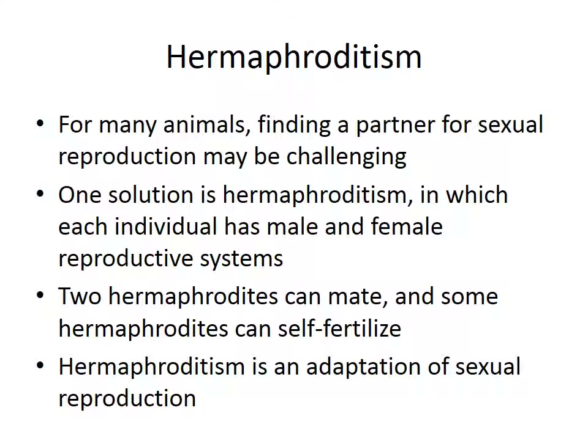In sexual reproduction there is also something called hermaphroditism. This is when there are distinct genders but finding a mate is very challenging for some animals. One solution is hermaphroditism, in which each individual has both male and female parts. Two hermaphrodites can mate, and sometimes hermaphrodites can self-fertilize. Hermaphroditism is an adaptation of sexual reproduction in response to the stress of not being able to find a mate.